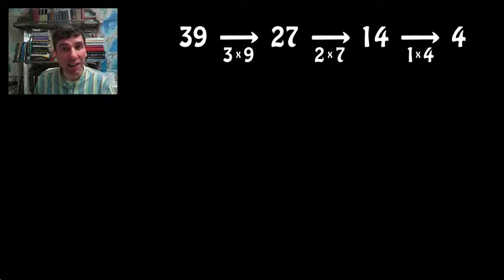You keep on doing that until you end up with a single digit. Then you look how many steps it took you to get there. In this case, it took us three steps to get there. So that means the multiplicative persistence of 39 is 3.